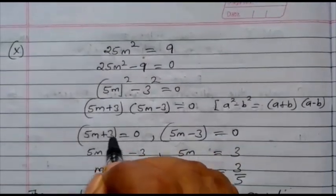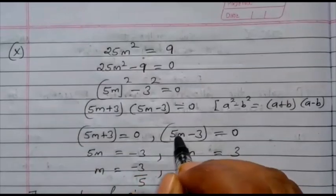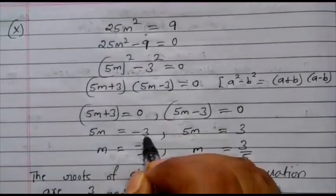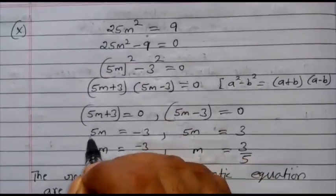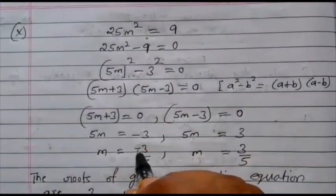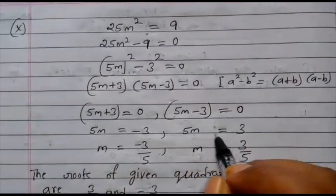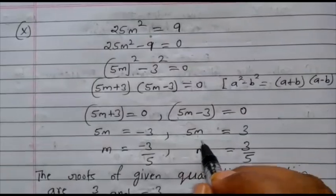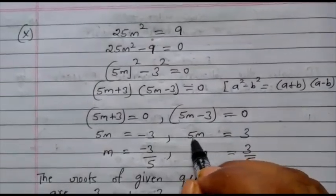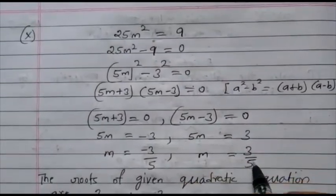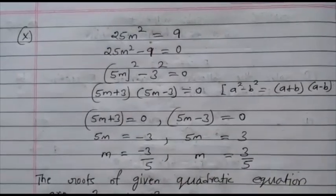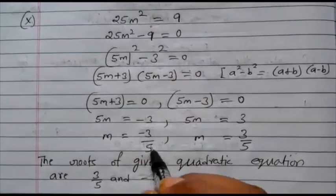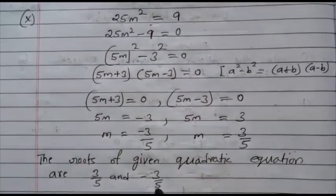So 5m plus 3 equals 0 and 5m minus 3 equals 0. From the first: 5m equals minus 3, so m equals minus 3 upon 5. From the second: 5m equals 3, so m equals 3 upon 5. The roots of the given quadratic equation are 3/5 and minus 3/5. Write the positive number first, negative number after.